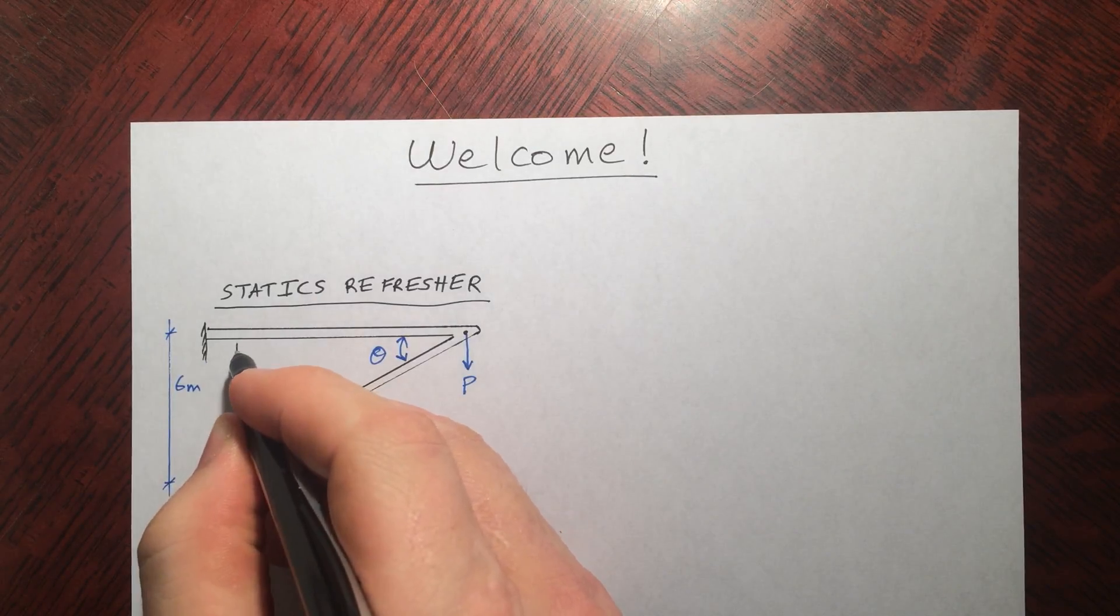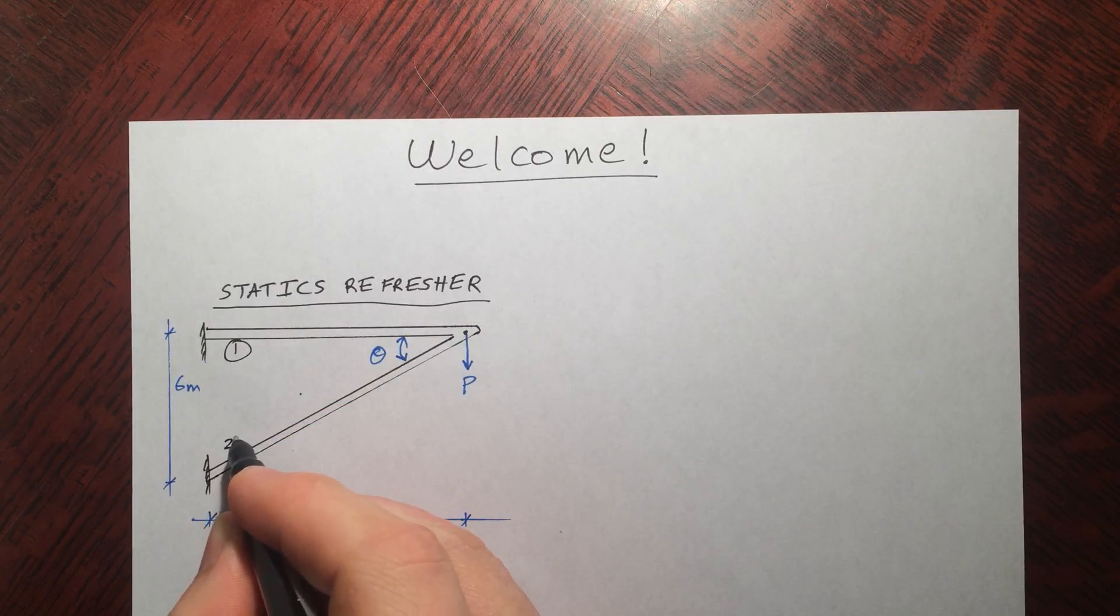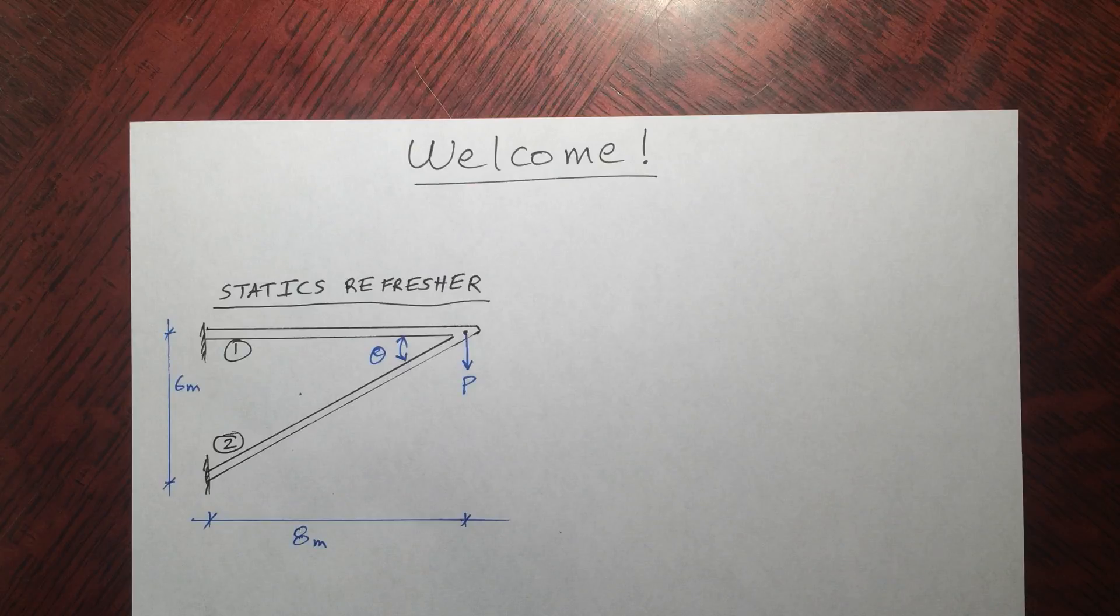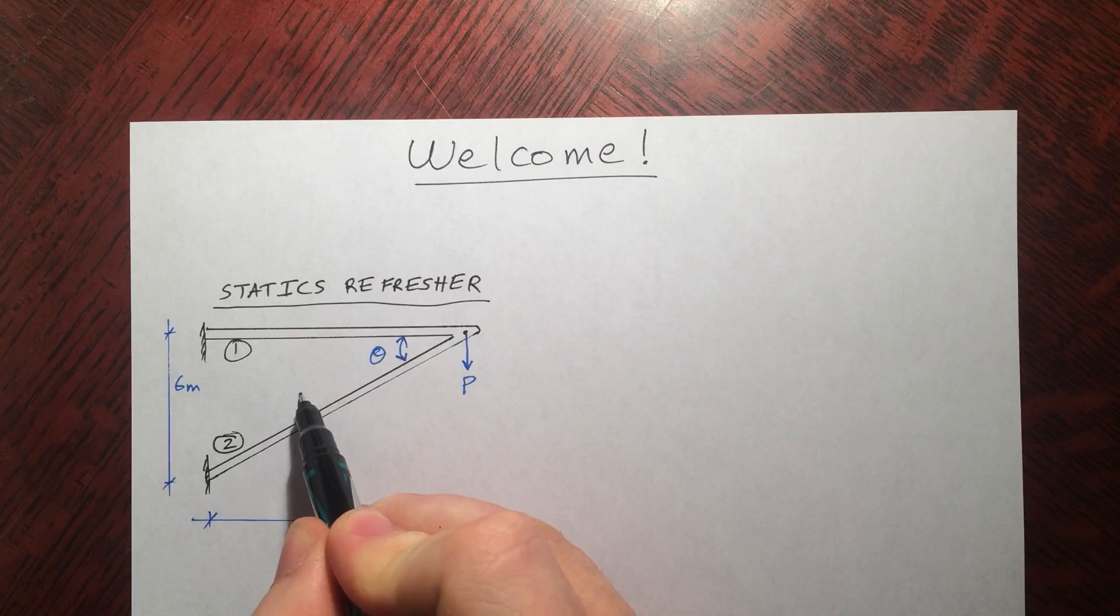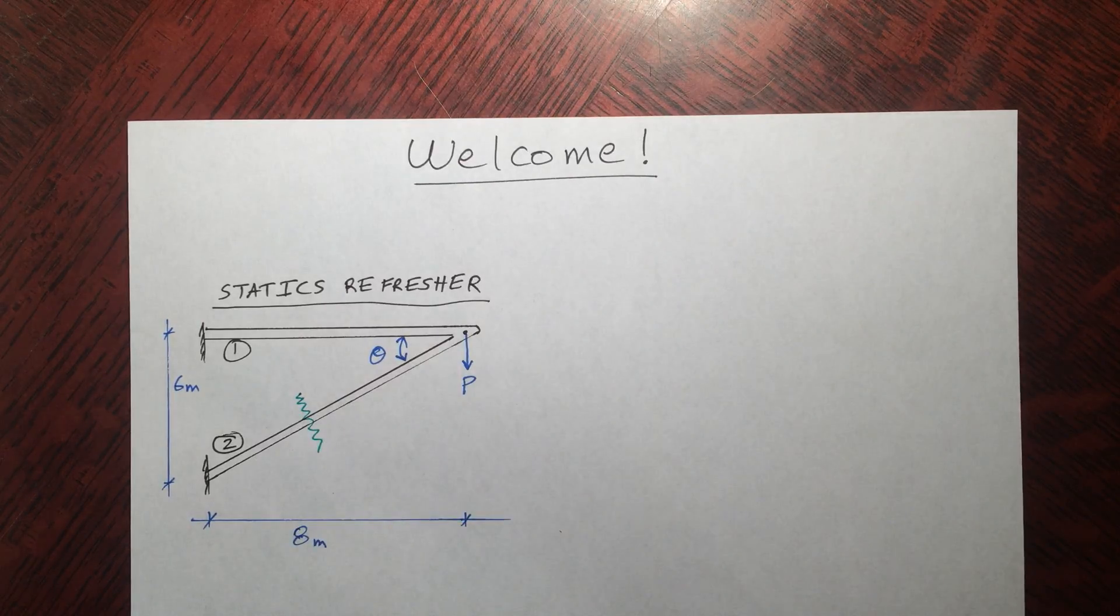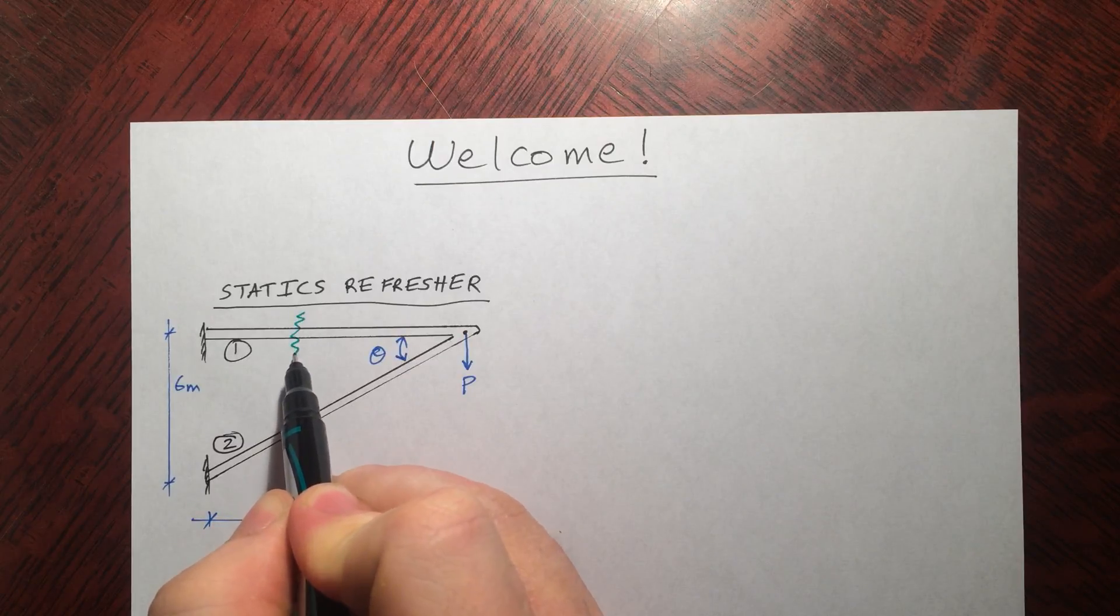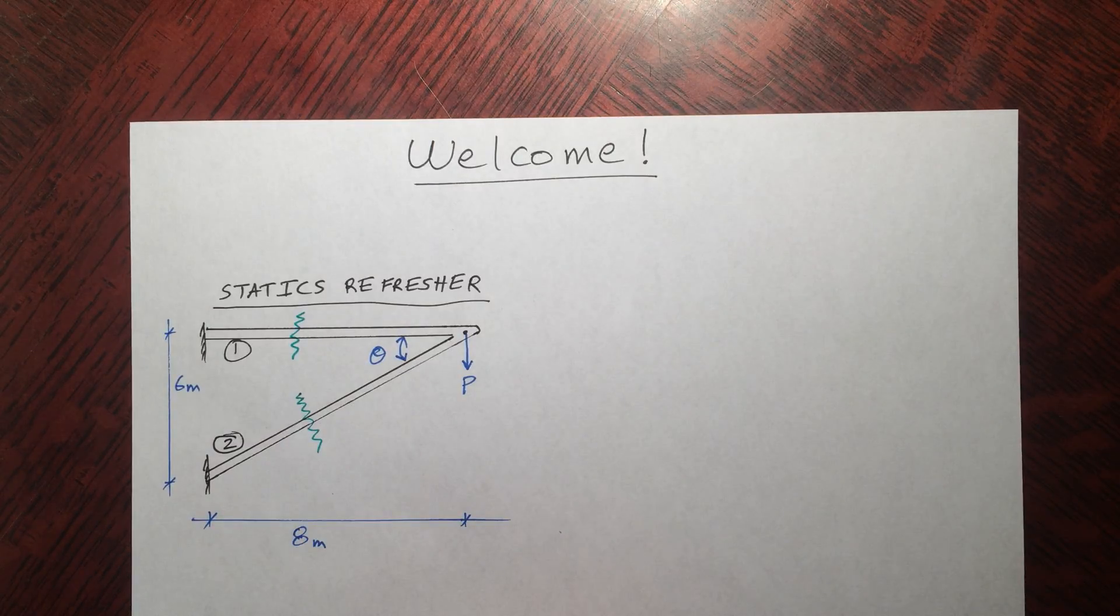Alright, so let's just name them, we'll call this upper one, one, this lower one, two. Okay, now to find out what's going on inside, we need to take a look of what's inside. So the way we do that is by making a cut. And I'll try to draw these with a green pen throughout my videos. Cut here, cut here. And that'll expose the forces inside.